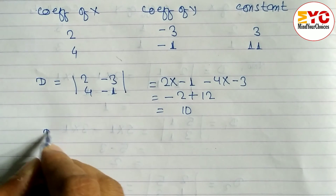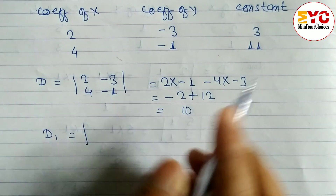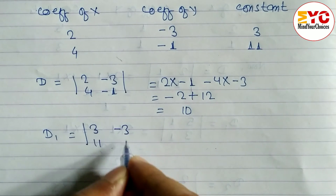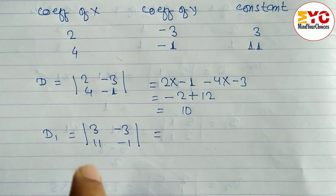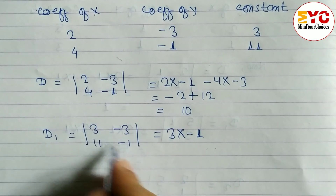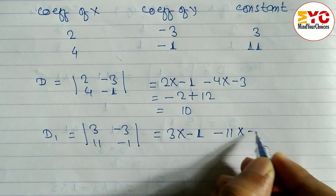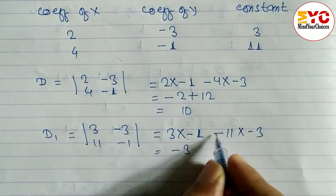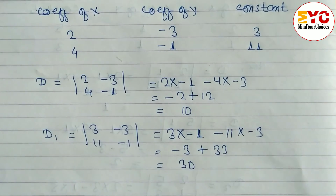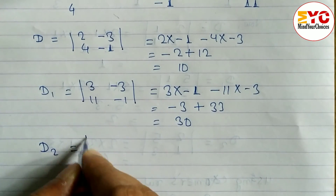To find D1, we take the constant numbers and the coefficients of y. The constants are 3 and 11, and the coefficients of y are minus 3 and minus 1. Multiplying the leading diagonal: 3 into minus 1 minus 11 into minus 3 gives minus 3 plus 33, which equals 30.